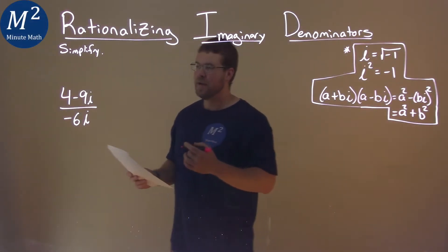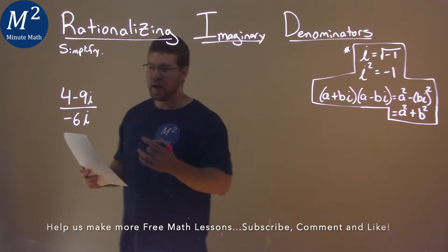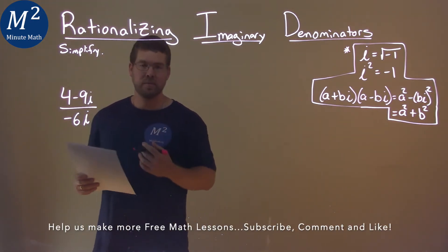We're given this problem right here. 4 minus 9i over negative 6i, and we gotta simplify.